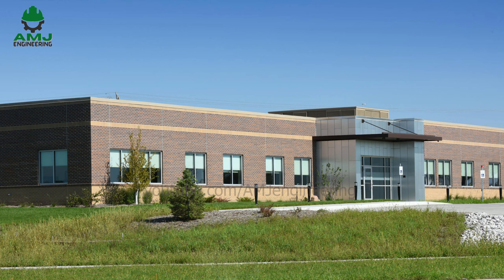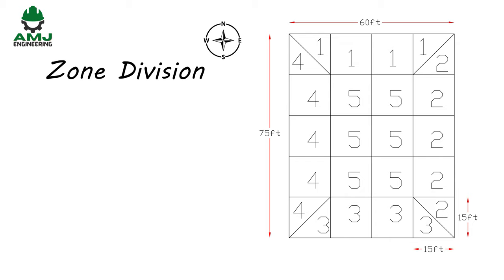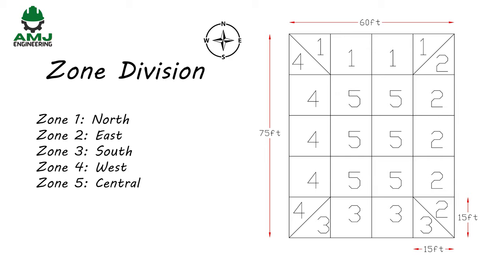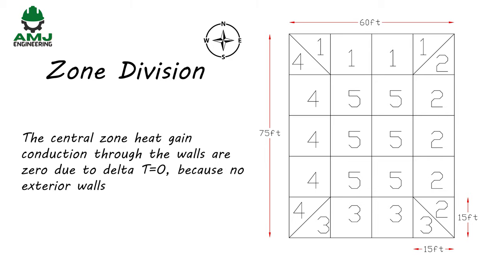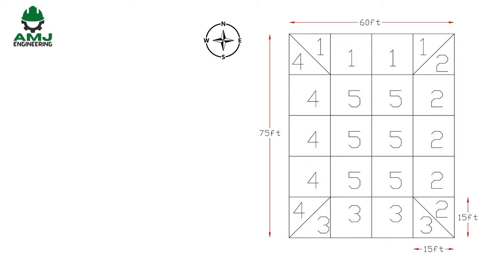The first step is to divide the area into zones. For simplicity, we assume the building consists of 20 offices of the same size. The building envelope is divided into 5 zones based on solar exposure of external walls. Zone 1 has north-facing walls, Zone 2 east-facing, Zones 3 and 4 south and west respectively. In Zone 5, the central zone, conduction heat gain through walls is zero because there are no exterior walls.